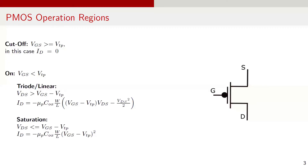A conducting channel forms in PMOS when VGS is smaller than the negative threshold voltage. If VDS is greater than VGS minus VTP, the PMOS operates in linear region, where the current flow is approximately linear with the applied drain voltage. When VDS is less than or equal to VGS minus VTP, the PMOS enters the saturation region. In this region, the current saturates and does not depend on VDS anymore.